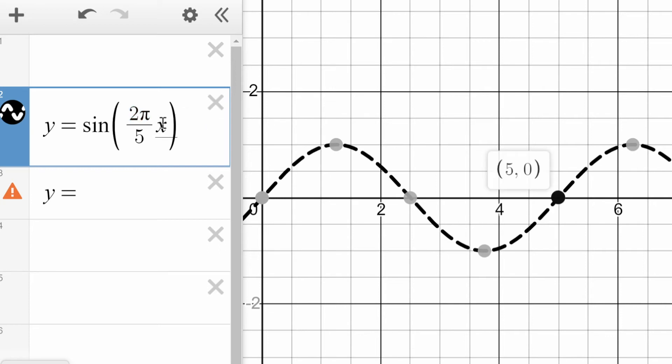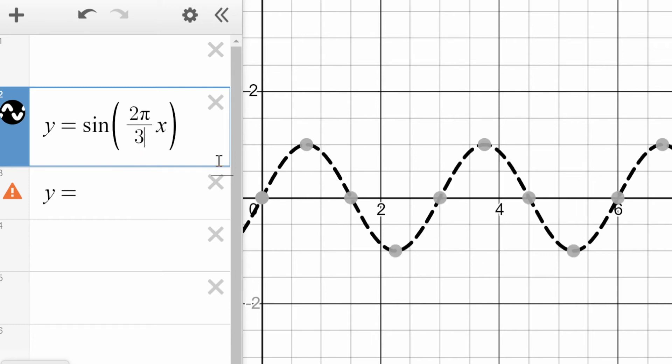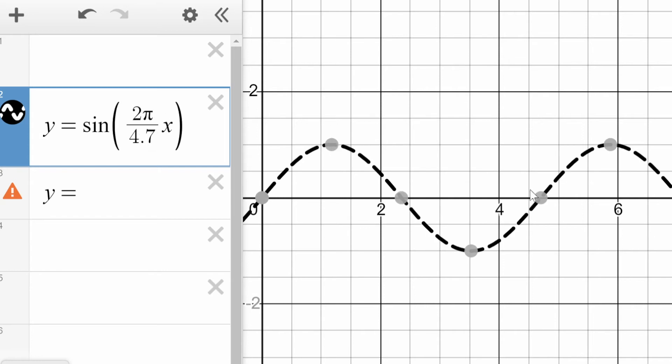So the thing to realize here is number 1, when there's a π involved, it's going to make it so that the π is not involved in the period. And the second thing to realize is if the b-value is written like this as 2π over something, that something is the period. When the b-value is 2π over 5, the period is 5. If we put 3, the period is now 3. If we even put some strange number like 4.7, the period is 4.7.